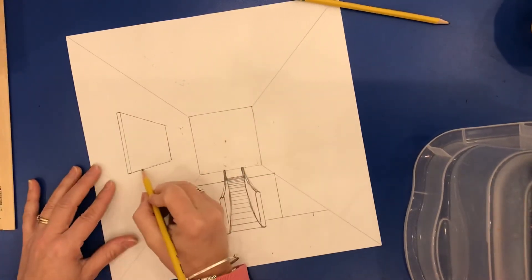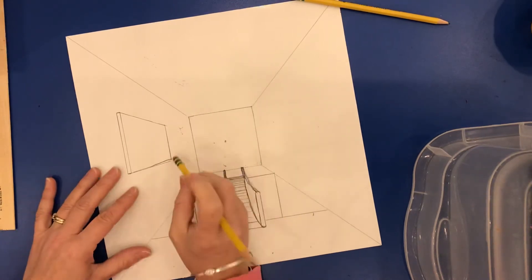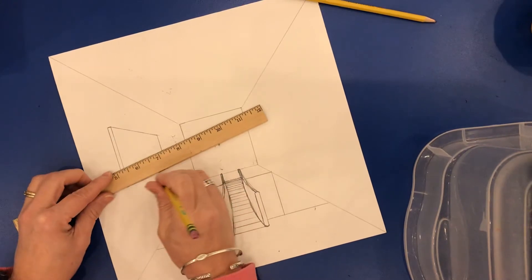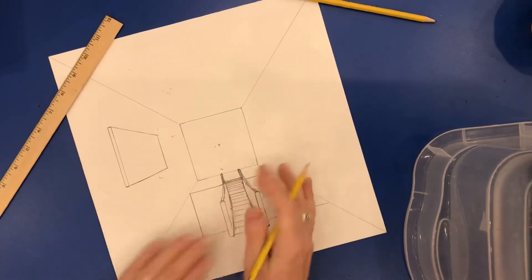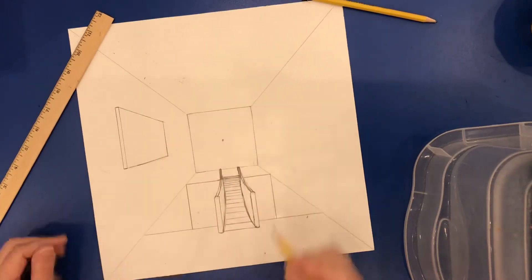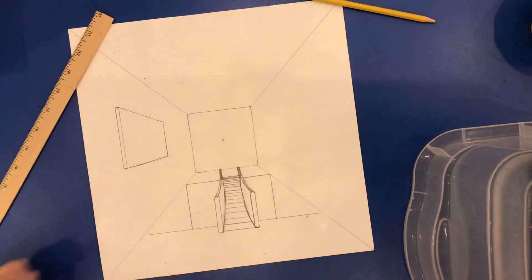And then I'm just going to connect my guidelines together and erase the ones I no longer need. Then you can go in and you could create a, I should be using my ruler. You can create a scene or a picture, painting, whatever you want on that. That could even be a TV. It could be a flat screen TV hanging on your wall. So you decide.